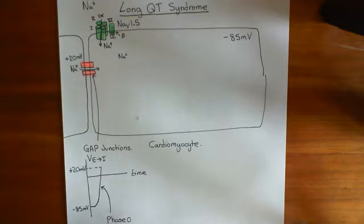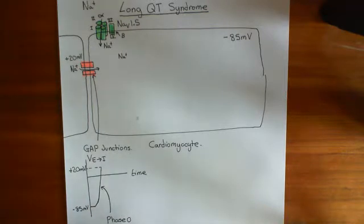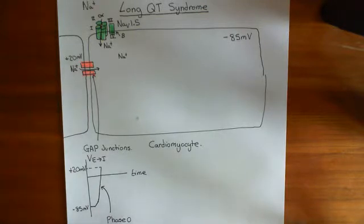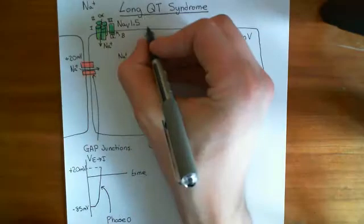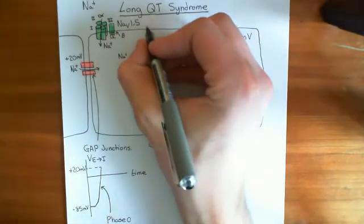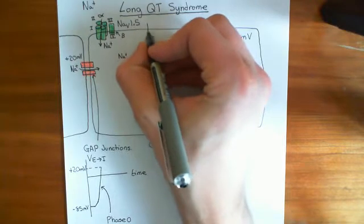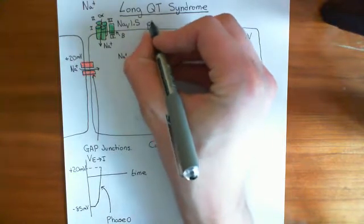What happens next is what's known as an inward transient outward potassium current. The next phase of the cardiac action potential involves this transient outward current of potassium, which is conducted through two types of voltage-gated potassium channels.